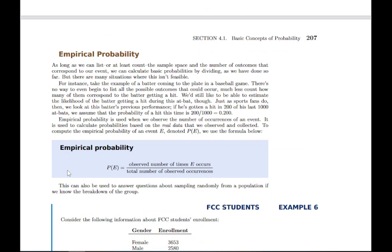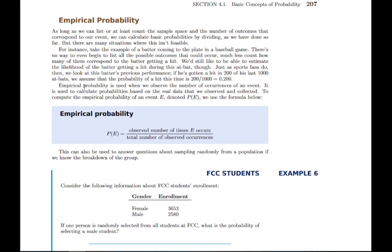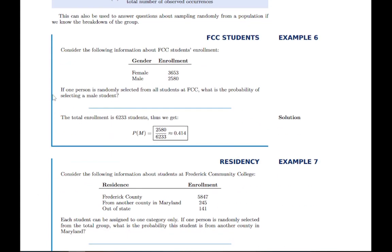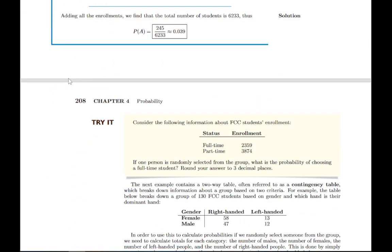Then we get to empirical probability, and again, it's what I described earlier, that we have some data from the past. Generally we use this when there's just no way to imagine what would happen; you have to actually see what happened. There's no way to imagine what could happen when a batter comes to the plate. There are just too many possibilities for what could take place, and without any past data, we can't make predictions for that particular batter. As you look through the examples that follow, generally the information we're given is arranged in a table like this, where we have a total number and then a breakdown into several different groups.